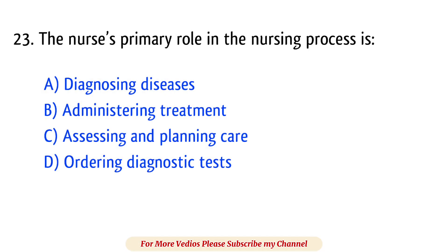Question number 23. The nurse's primary role in the nursing process is? The right answer is option C: Assessing and planning care.